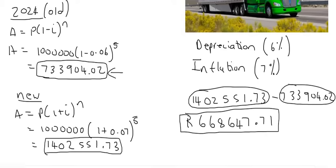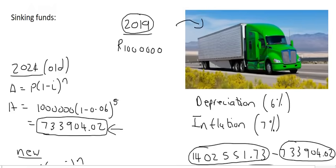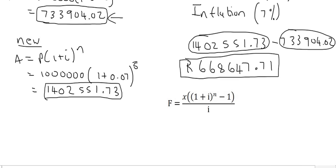So what they do in 2019 is they will set up a sinking fund. All it is is a future value account where they will make regular payments. So the owner of the truck company knows how much money they're going to need—they're going to need a future value of R668,647.71.